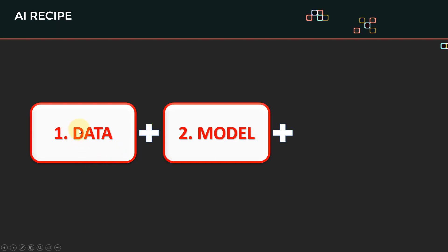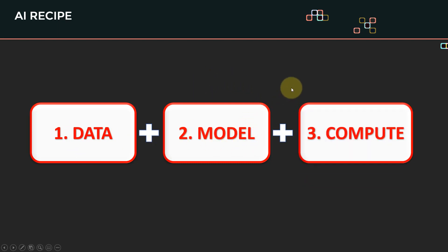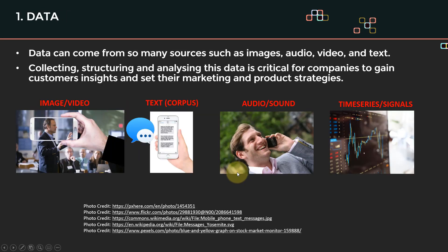Now with the data and the model, the third ingredient needed to build any AI model is compute power. Let's dig a little bit deeper into the data. Data can come from many sources such as images, audio, video, and text.